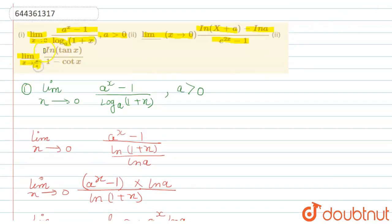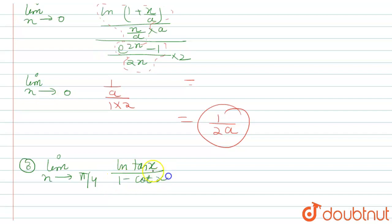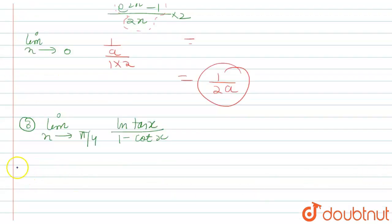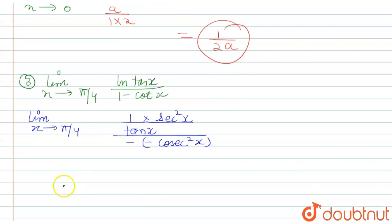Now the last part says: limit x tends to pi by 4, ln(tan x) upon one minus 4x. We directly apply L'Hôpital's rule here. Differentiating: the numerator becomes one over tan x times sec squared x, and the denominator differentiates to minus 4.